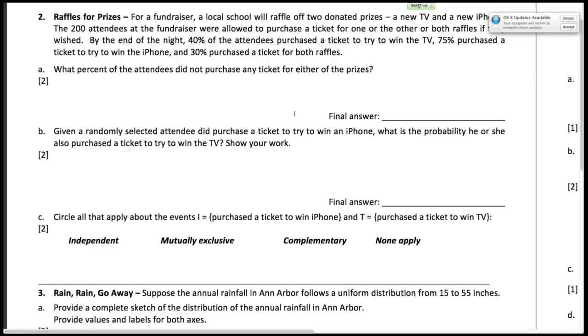Okay, so this question tells us that we had two kinds of prizes, a TV or an iPhone, and 200 people were allowed to pick either one and buy tickets. The key information is that 40% did the TV, 75% did the iPhone, and 30% did both.